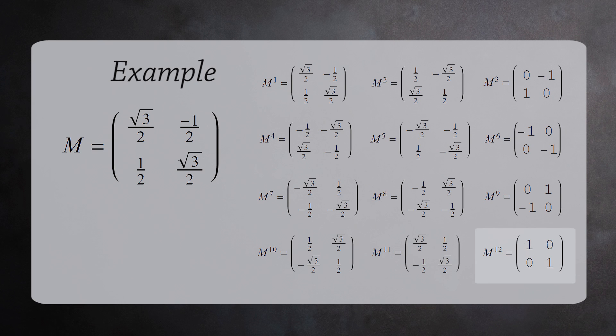We see that m to the 12th power is the identity matrix. So the order of m is 12.